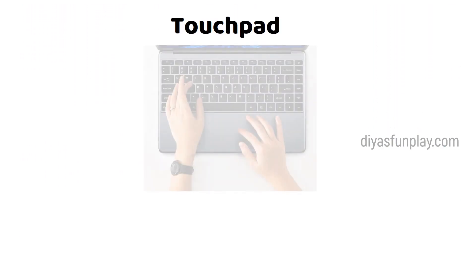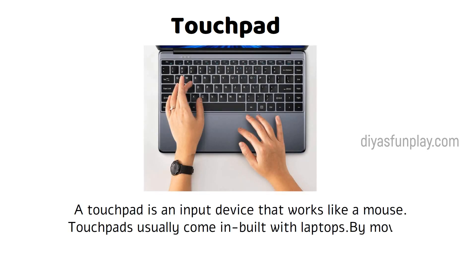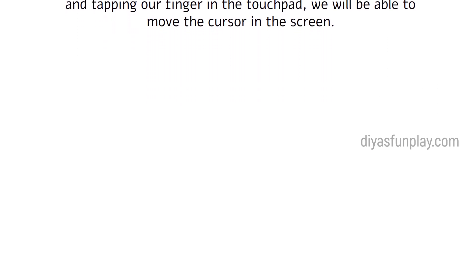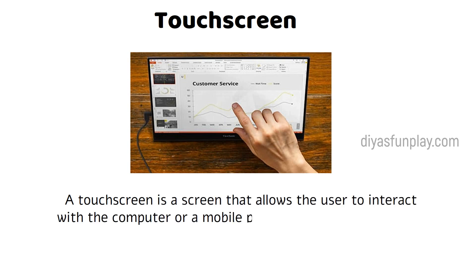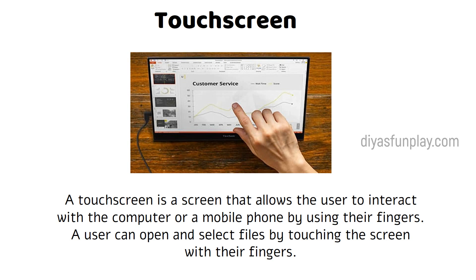Touchpad. A touchpad is an input device that works like a mouse. Touchpads usually come inbuilt with laptops. By moving and tapping our finger on the touchpad, we will be able to move the cursor on the screen. Touchscreen. A touch screen is a screen that allows the user to interact with their computer or mobile phone by using their fingers. A user can open and select files by touching the screen with their fingers.